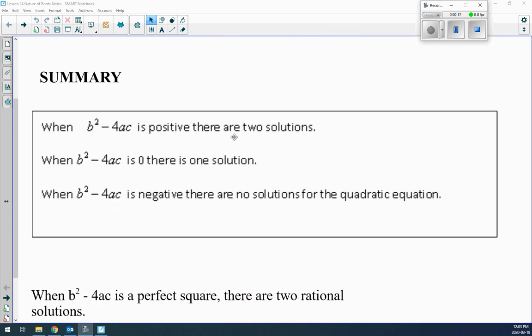If it's positive, there's two solutions. It crosses the x-axis at two points. If it's equal to zero, there's one solution. It touches the x-axis, so we only consider it as one point.